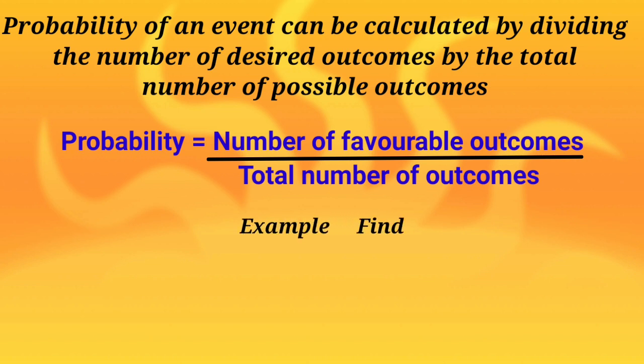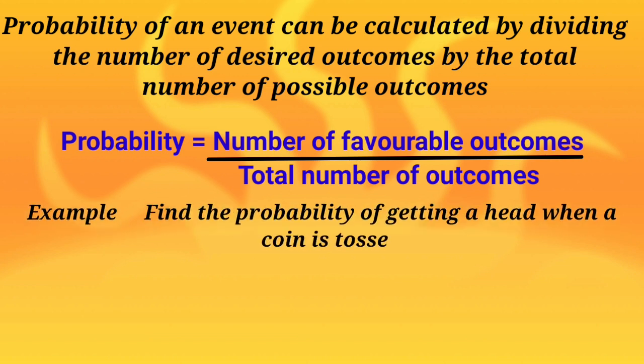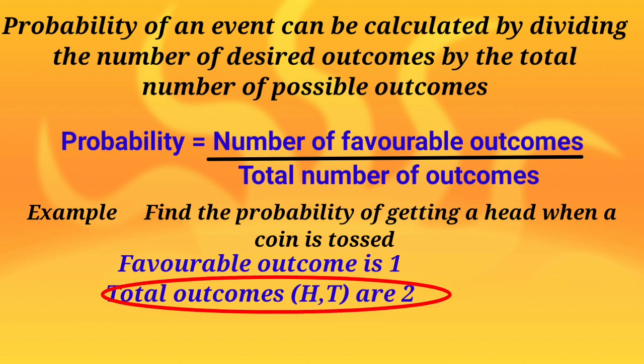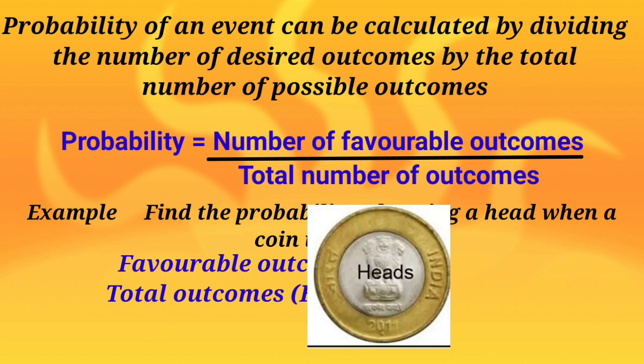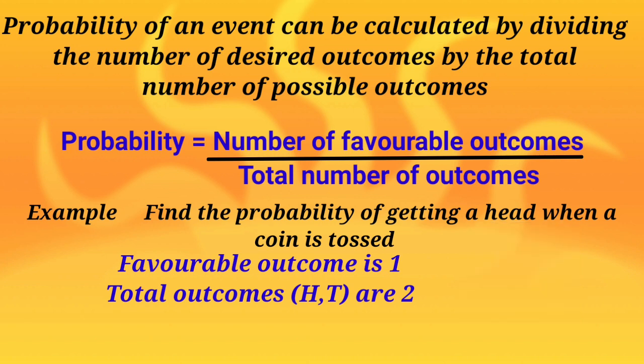For example, probability of getting a head when a coin is tossed. Favorable outcome is 1 because we want heads only. Total outcomes, when we toss a coin, there is chance that heads can come up or tails can be up. So total outcomes are 2, that means heads or tails. So probability of getting a head is favorable outcomes 1 and total outcomes 2. So 1 by 2 is the probability.